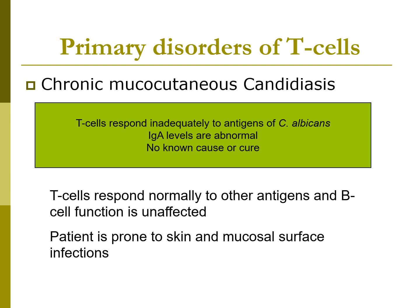Another primary T-cell disorder is chronic mucocutaneous candidiasis. The T-cells respond inadequately to antigens of Candida albicans, and IgA levels are abnormal, with no known cause or cure. The T-cells respond normally to other antigens but abnormally to Candida albicans antigens. B-cell function is unaffected, but patients are prone to skin and mucosal surface infections.